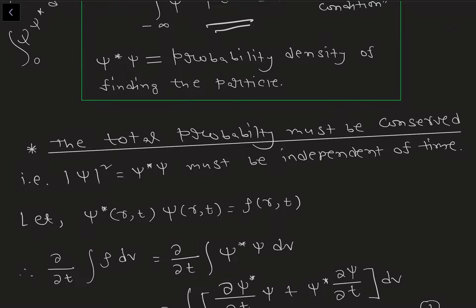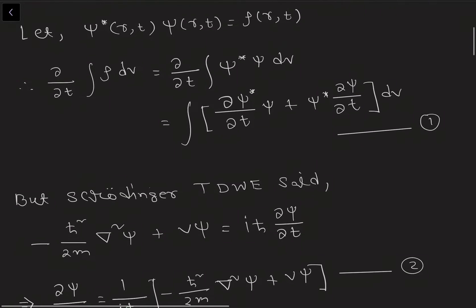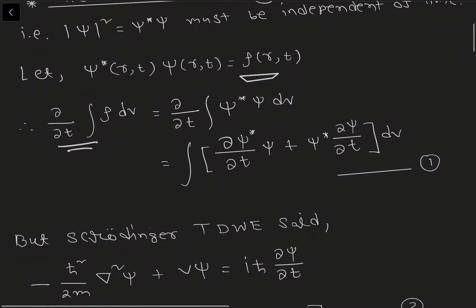The total probability being conserved means that psi-star psi must be independent of time. That means del/del-t of the integral of psi-star psi dV has to be zero. Another way we can say this: psi-star psi is our probability density rho of r and t. So we are going to prove that the rate of change of probability density — where rho dV gives us the total probability within the volume — equals the integral of psi-star psi dV.